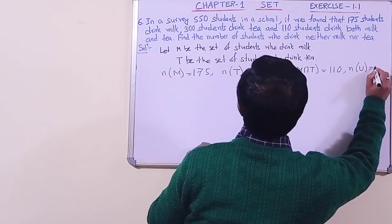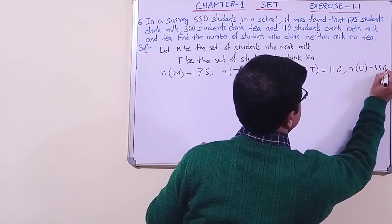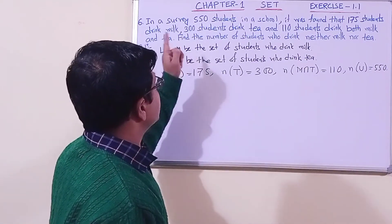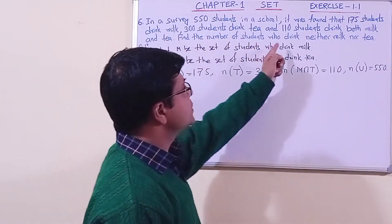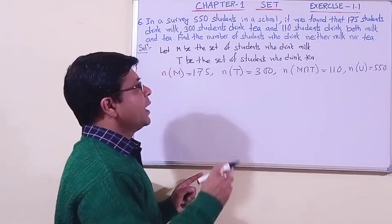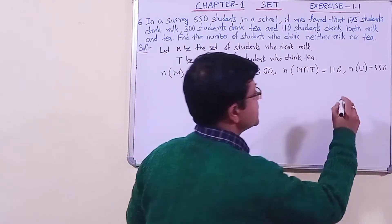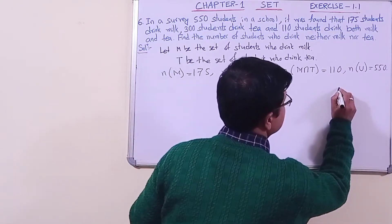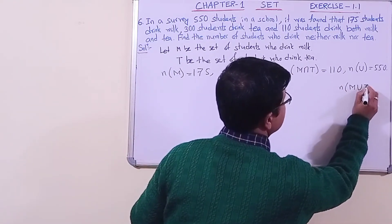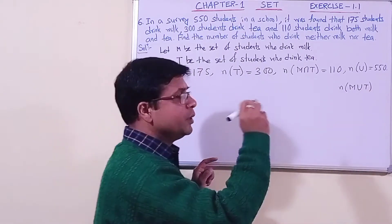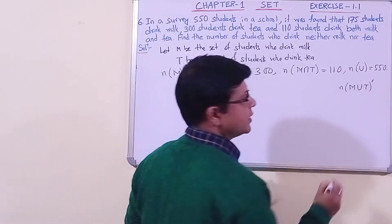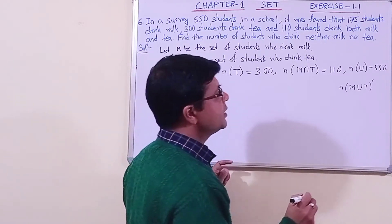So here, what we have to find is the number of students who drink neither milk nor tea. Now, the number of students who drink either milk or tea can be represented using union. But we have to find neither, so how will we represent that?